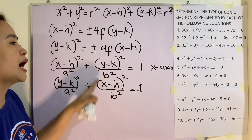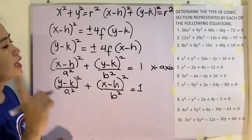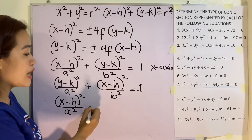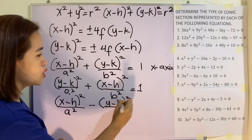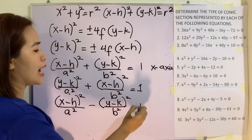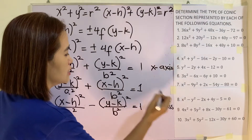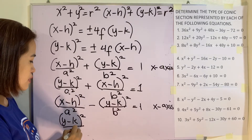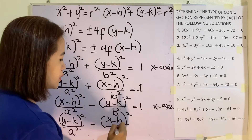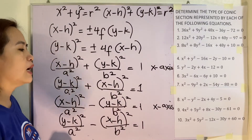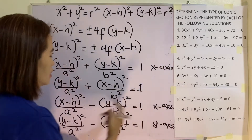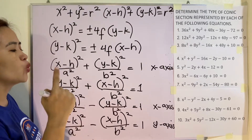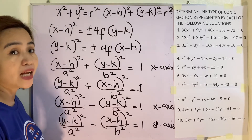There is a possibility that they have numerical coefficients because of the denominators. Now, for the last one — the hyperbola. We have: quantity x minus h squared over a squared, minus quantity y minus k squared over b squared, is equal to 1. The transverse axis here is the x-axis. If your transverse axis is the y-axis, you use: quantity y minus k squared over a squared, minus quantity x minus h squared over b squared, is equal to 1. In hyperbola, take note that one of the squared terms has a negative sign. So if you see a negative sign on one of the squared terms, it is already a hyperbola.